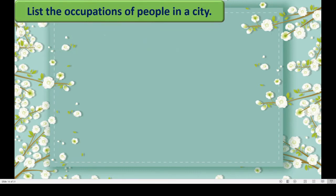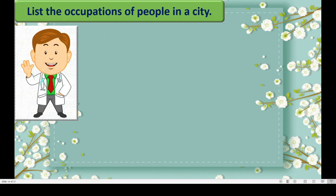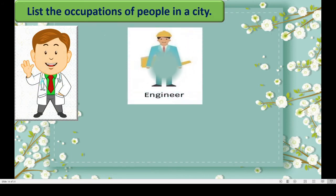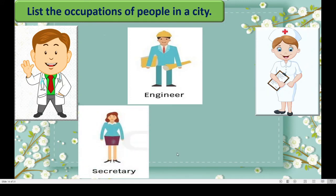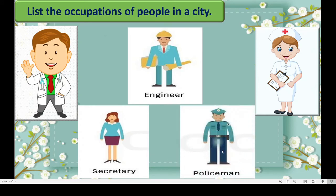Next, list the occupations of people in a city. Occupation means Kaam dhanda. If you see the examples, you will come to know the meaning of occupation. He is a doctor. He is an engineer. She is a nurse. She is a secretary to the boss. He is a policeman. These are all called occupations.